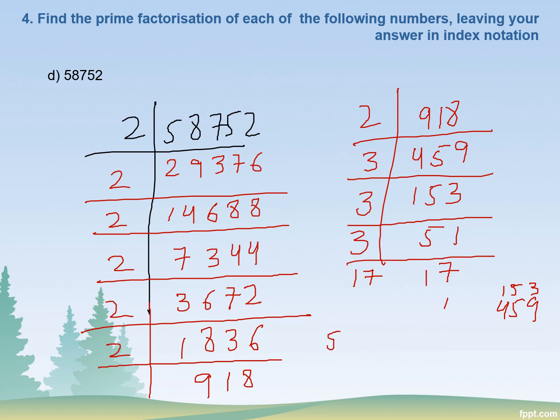Writing 58752 in index notation: 2 appears 7 times, so we write 2 to the power 7, multiplied by 3 and multiplied by 17.